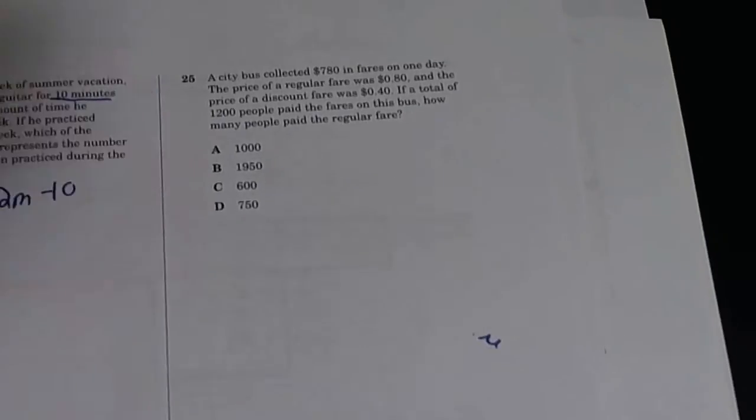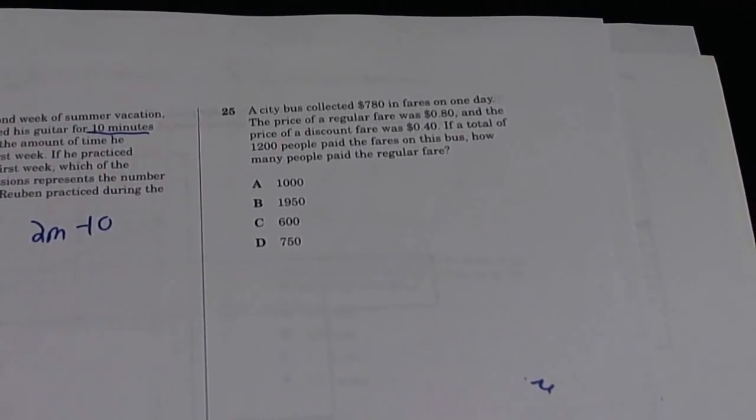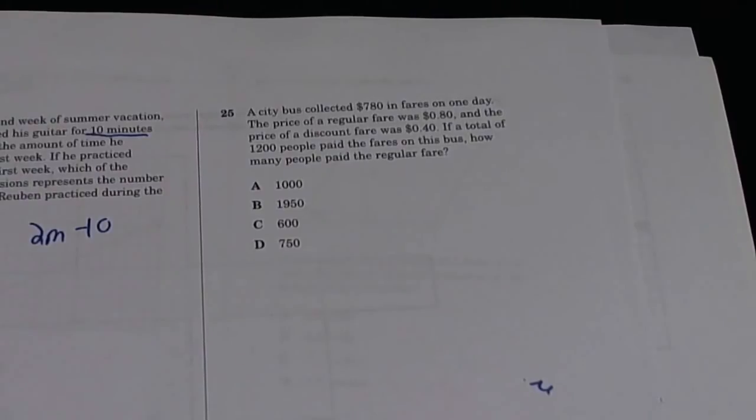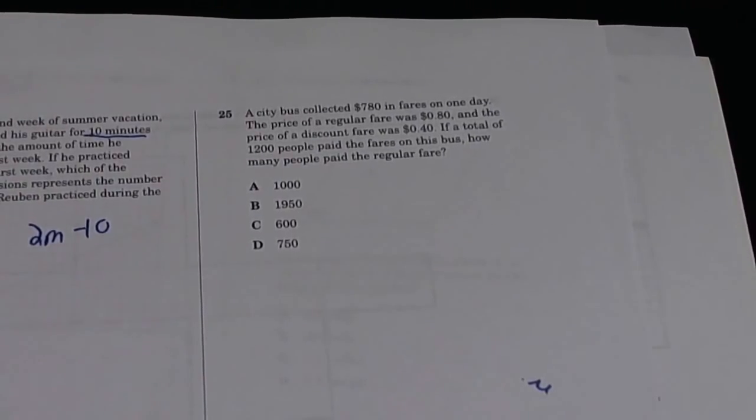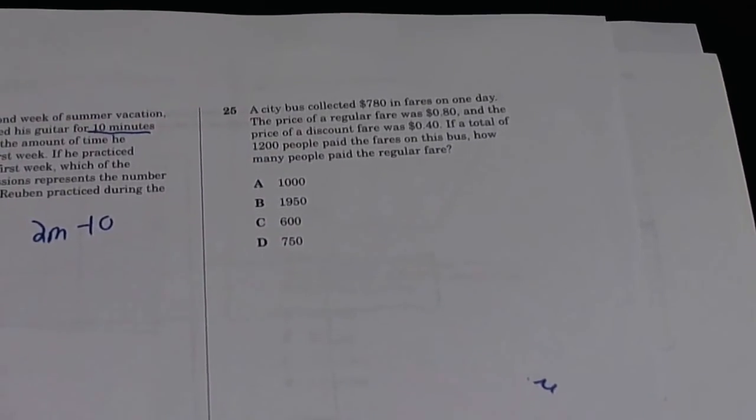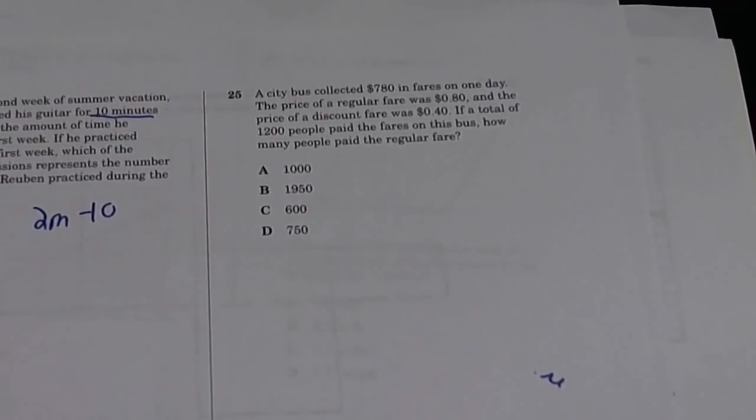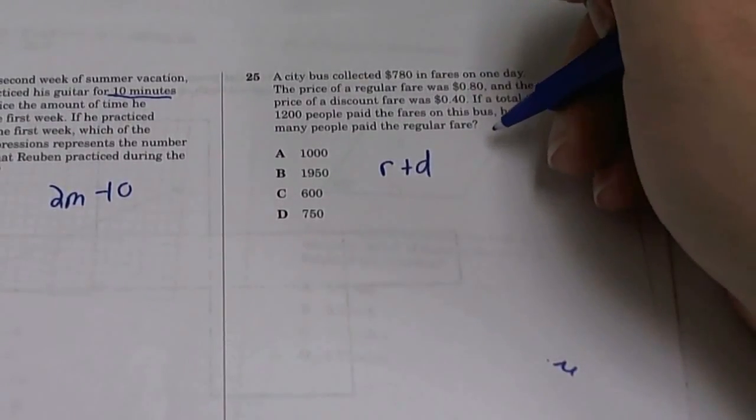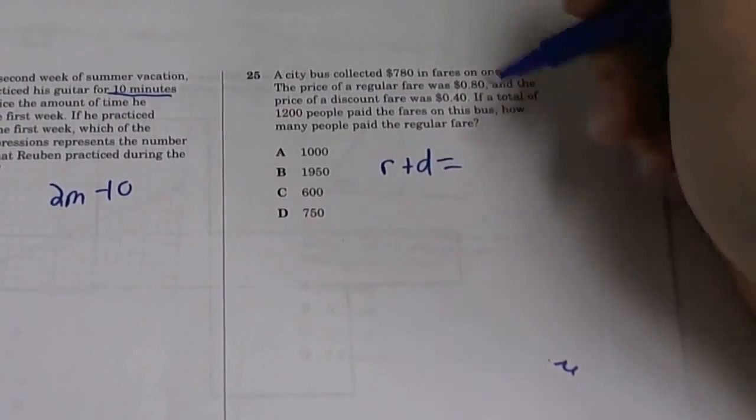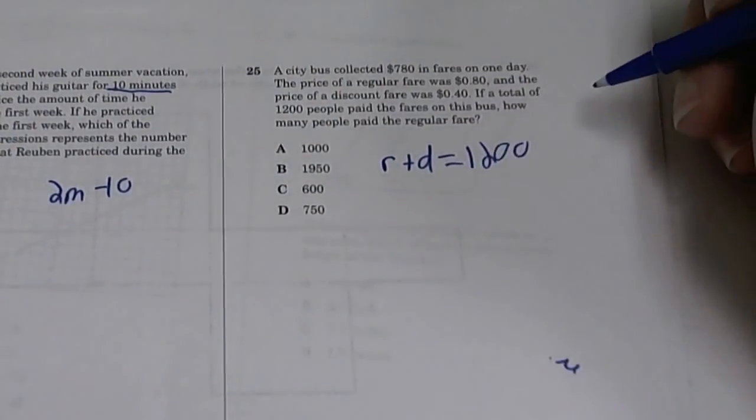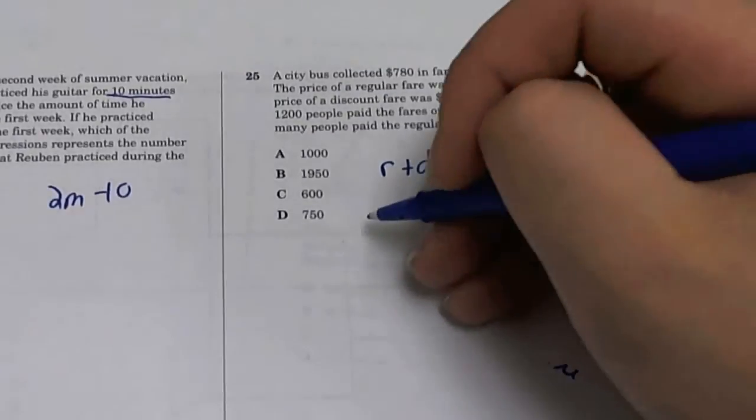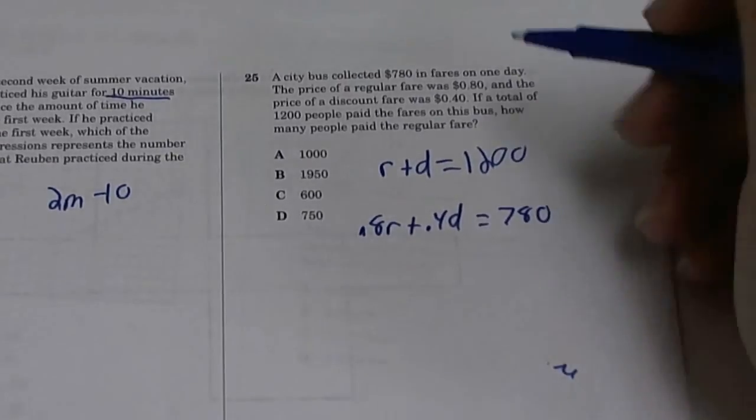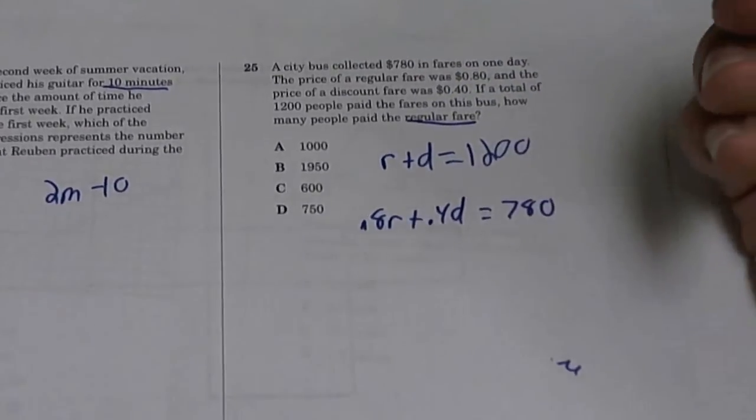Number 25. A city bus collects $780 in fares one day. The price of regular fare was 80 cents, and the price of discount fare is 40 cents. A total of 1,200 people pay the fares on this bus. How many people pay the regular fare? So the bus collects a total of $780. So regular people plus discounted people has to equal 1,200. Now the price of regular fare is 80 cents. So 0.80 R plus 0.4 D has to equal $780. How many people pay the regular fare? So we're solving for regular fare, which is R.